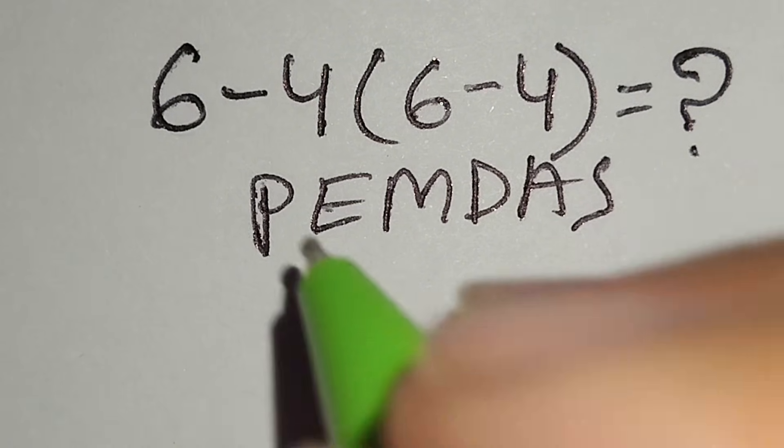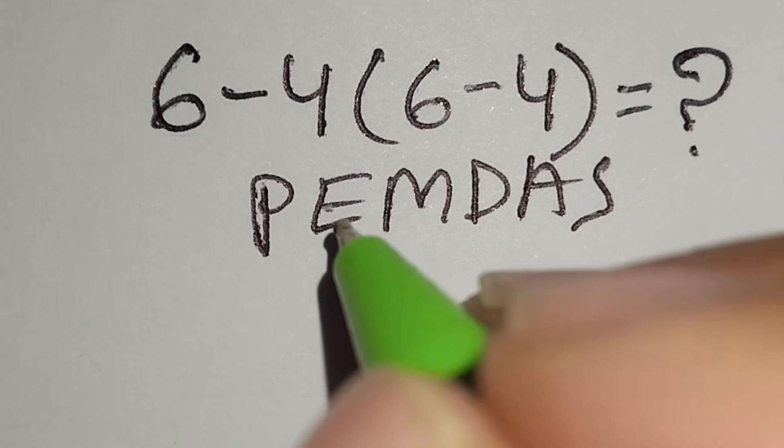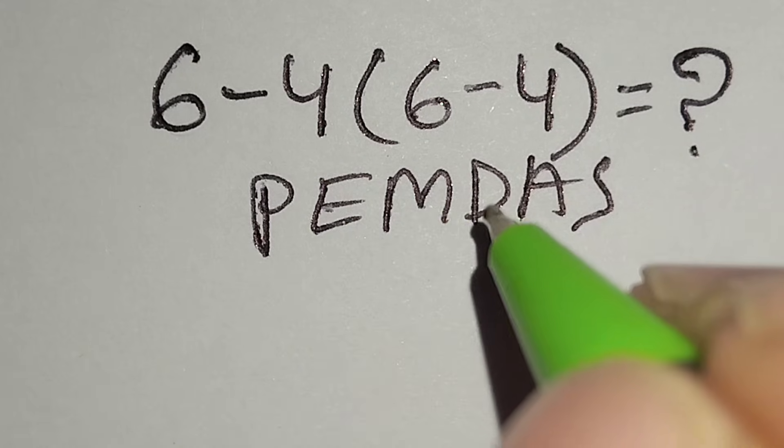According to the PEMDAS rule, at first we have to work with parenthesis, then exponent, then multiplication or division,